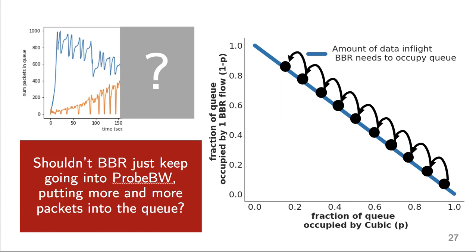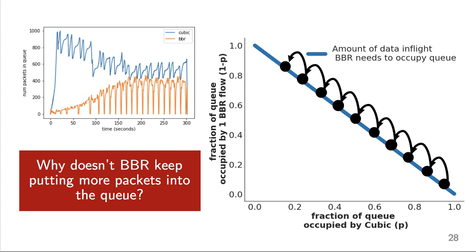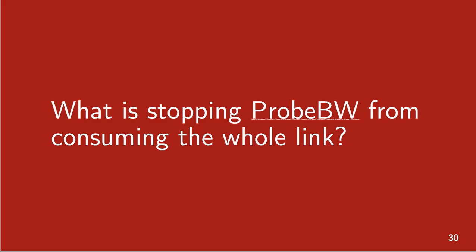So given what we know about BBR so far and how it uses probe bandwidth to figure out its sending rate, shouldn't BBR just keep going into probe bandwidth, putting more and more packets into the queue, essentially moving up this blue line until Cubic essentially has no packets in the queue and is nearly starved. Well no, that's not what we see in our empirical results. So here I've revealed the second half of this graph and it looks like BBR stops at some point. So what exactly is stopping BBR here? Why isn't probe bandwidth just allowing BBR to consume the entire link?